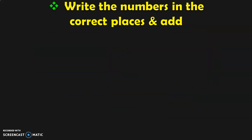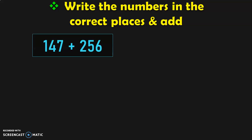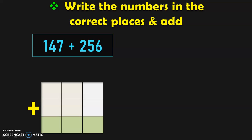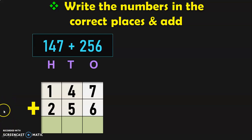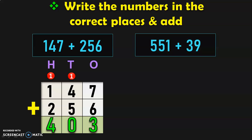Write the numbers in the correct places and add. 147 plus 256: I have given you 9 boxes with the addition symbol. Place these numbers in the correct boxes and add them. Write down the place values — 1's, 10's, and 100's — then write the numbers. Begin addition from the 1's place: 7 plus 6 is 13; write 3 in the 1's place and carry over 1. 1 plus 4 is 5; 5 plus 5 is 10; write 0 in the 10's place, carry over 1. 1 plus 1 is 2; 2 plus 2 is 4. So the answer is 403.